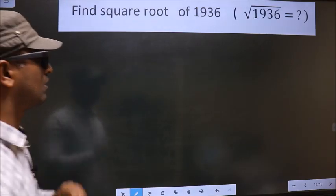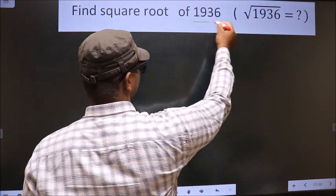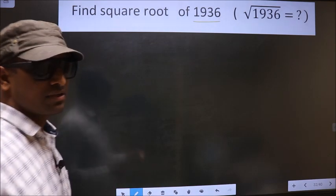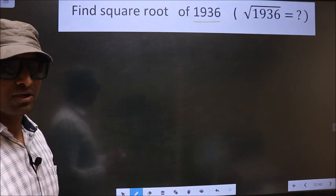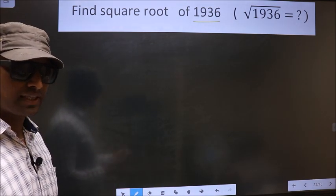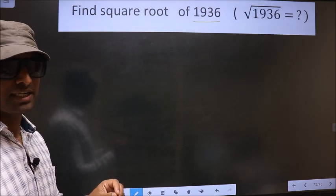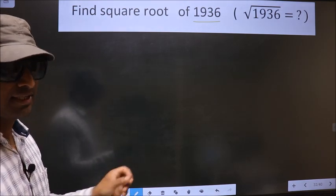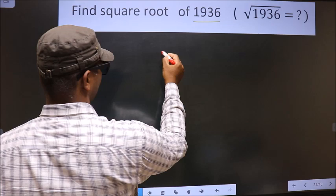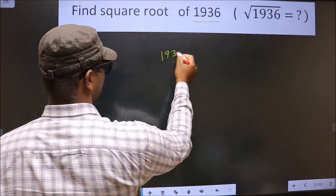Find square root of 1936. To find the square root by long division method, first we have to frame it in this way, that is, 1936.